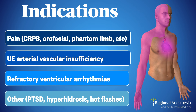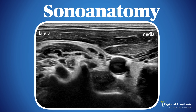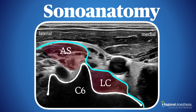With the linear transducer placed on the anterolateral neck, a needle is advanced in-plane from the lateral aspect. Here's the image we hope to get: we see the bony outline of the C6 vertebra including the anterior and posterior tubercles. The anterior scalene and longus colli are clearly visible, and we can also appreciate the prevertebral fascia binding these down to the spine.